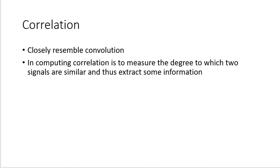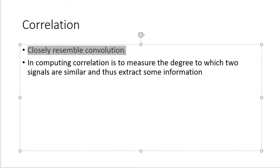The first thing is the definition of correlation. If you are studying signal processing, you are most likely to encounter convolution. In computing, correlation closely resembles convolution and you will find out why in the latter part.